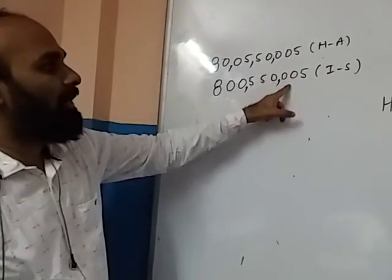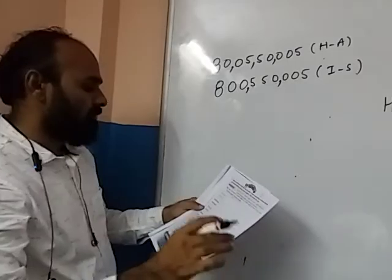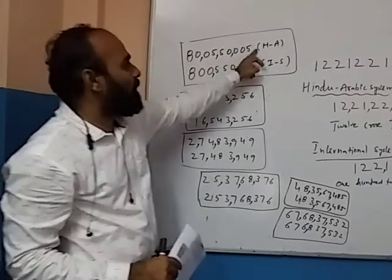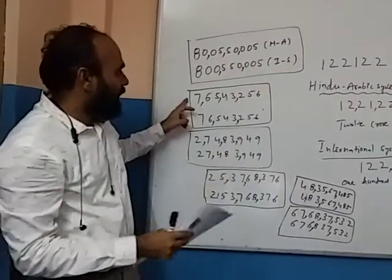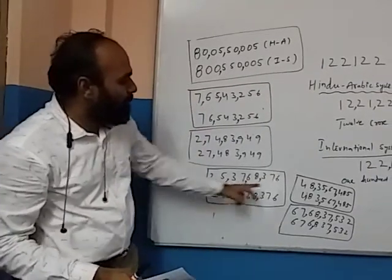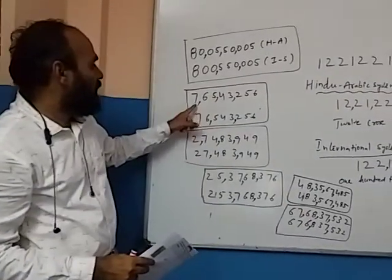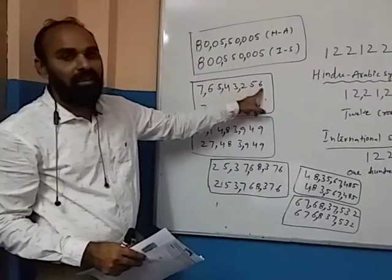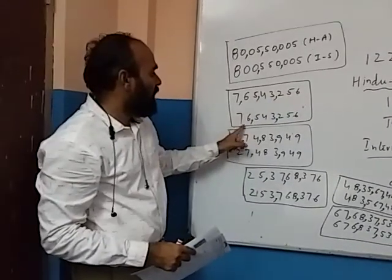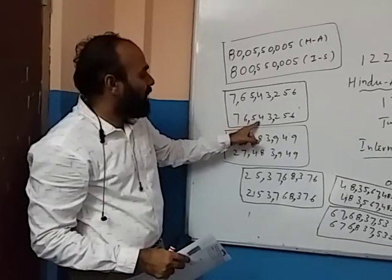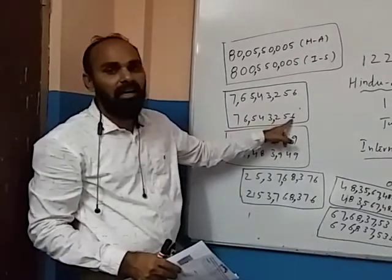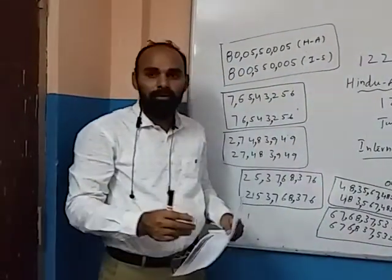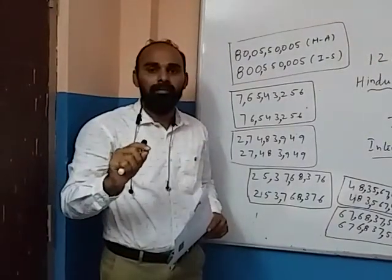You should write these number names. I have already explained how to write in the Hindu-Arabic System and the International System. In the remaining questions also, divide the numbers by using commas, then write the number names carefully. Thank you.